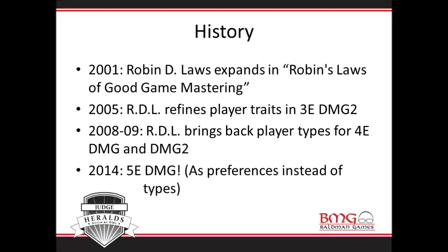In 2008 and 2009, he was again brought in to write the 4e DMG and DMG 2. And then last year, the fifth edition Dungeon Master's Guide expresses these as preferences rather than individual player types, but it is once again in that material. Robin is a consultant on the fifth edition Dungeon Master's Guide. The topic appearing in three editions worth of DMGs — four different books — shows how important this has been to everyone at Wizards of the Coast.